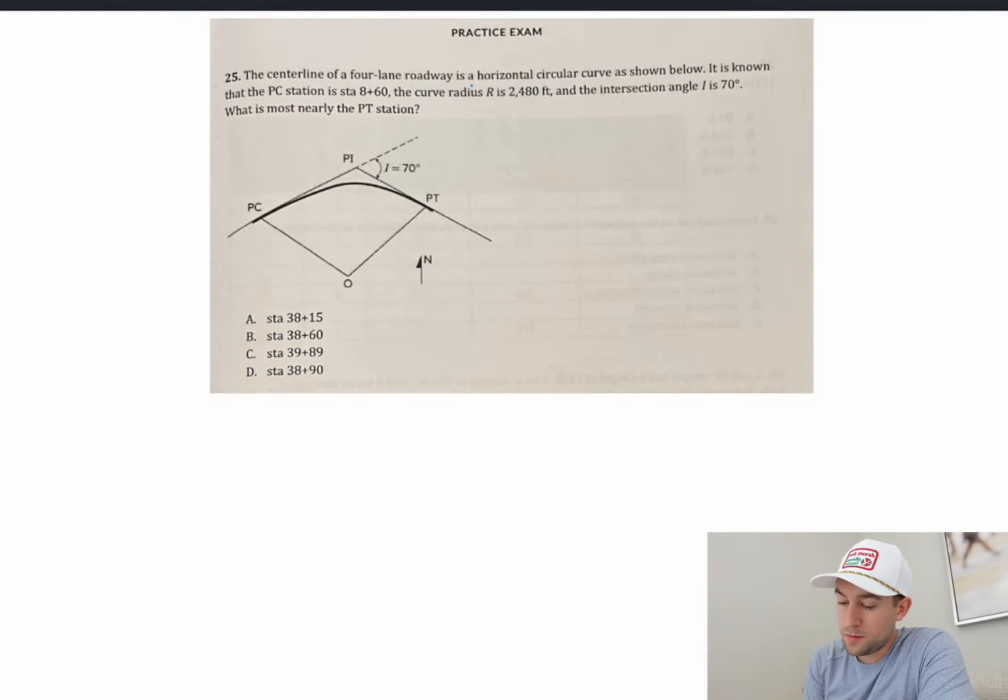Alright, so let's go ahead and read this problem. It is asking the centerline of a four-lane roadway is a horizontal circular curve as shown below. It is known that the PC station is station 860, the curve radius R is 2,480 feet, and the intersection angle I is 70 degrees. What is most nearly the PT station?